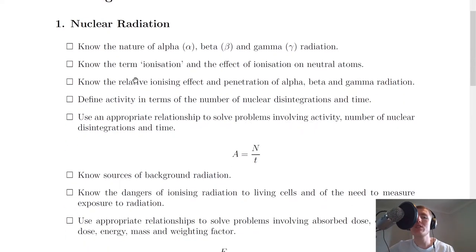Firstly we need to know the nature of alpha, beta and gamma radiation. This basically means the table of properties that we looked at. Remember we looked at things like the charge, the mass, the range in air and what it's absorbed by. You need to know all the properties of alpha, beta and gamma radiation. You should also be aware that they all result from radioactive decay. That's what it means by nature - the origin of the radiation, where it comes from.